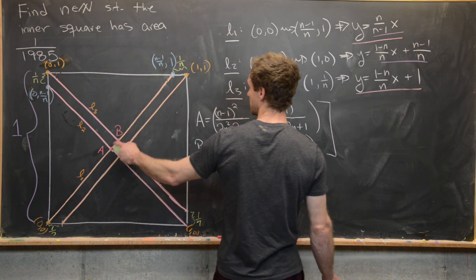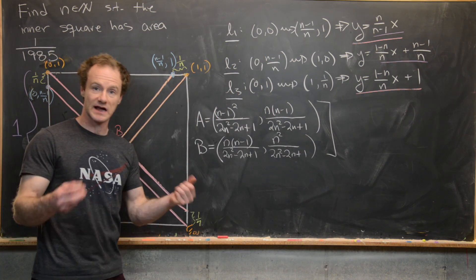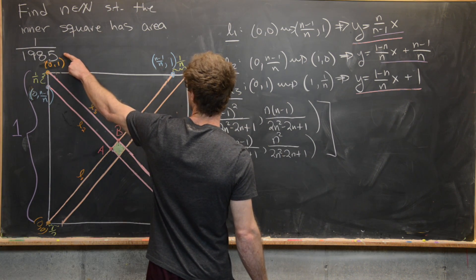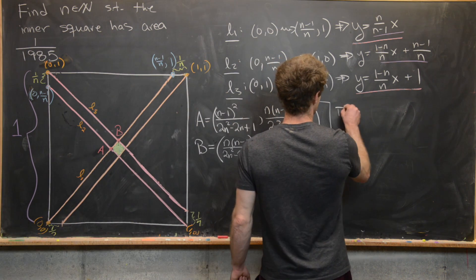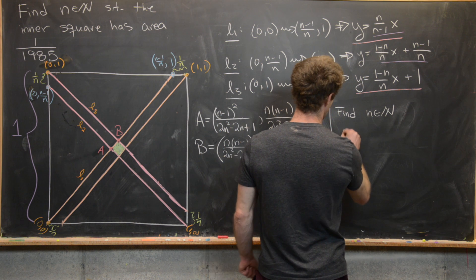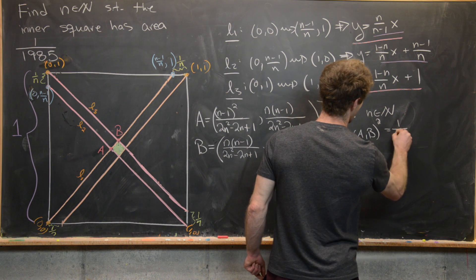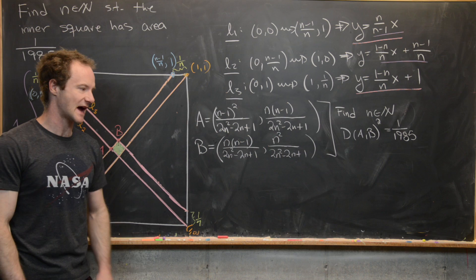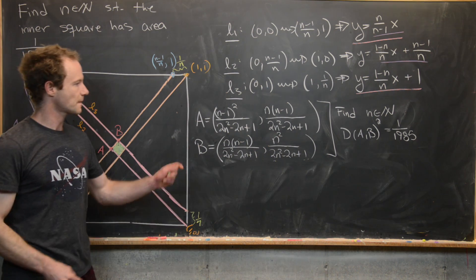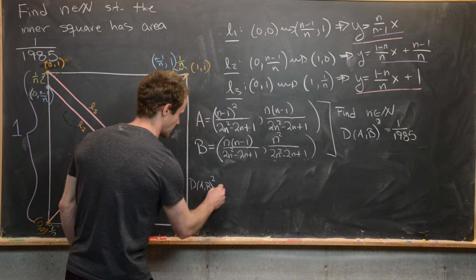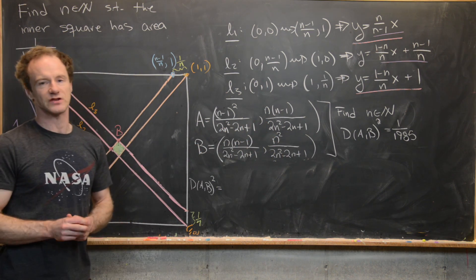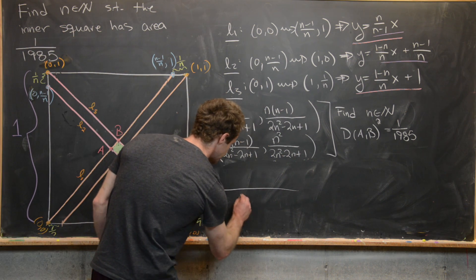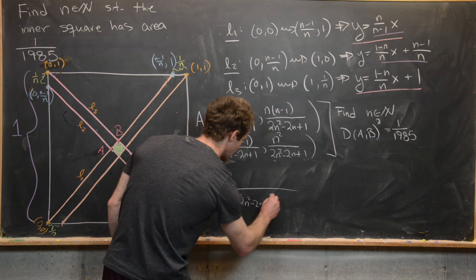The distance from A to B is the side length of the inner square. Since the area of a square is the side length squared, we need |AB|² = 1/1985. All four coordinate terms share the denominator (2n²−2n+1), so after squaring in the distance formula, that denominator squared appears below.